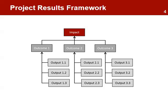This level is important: each outcome must have all the required outputs. The project will not be able to achieve the outcome objective if one of the outputs is not delivered. For example, to fully achieve outcome 3, all three outputs must be delivered.